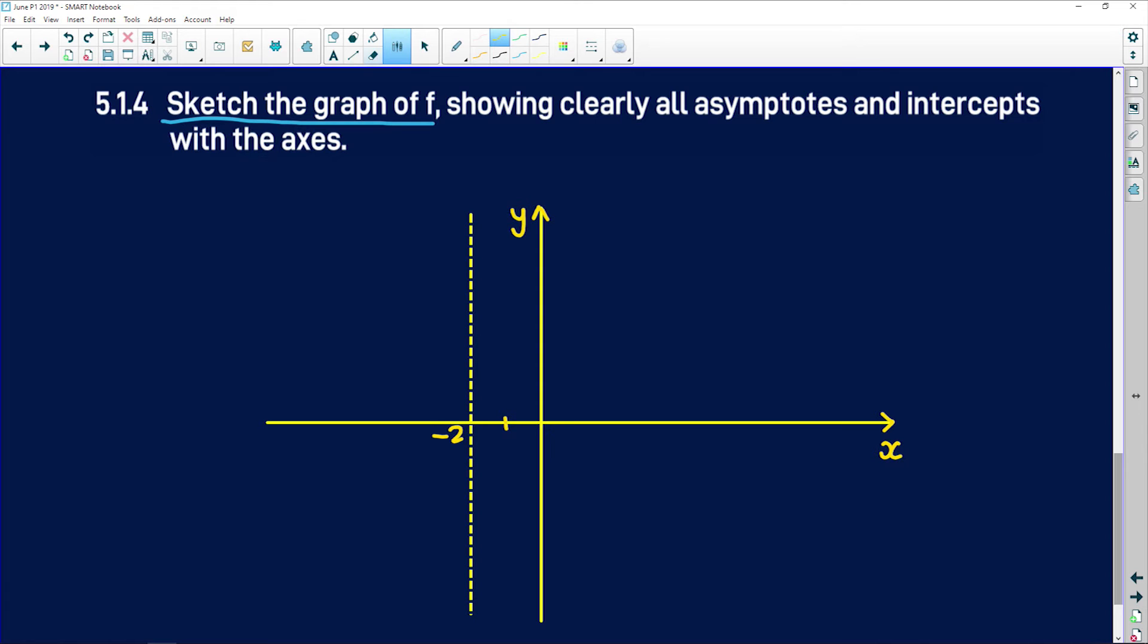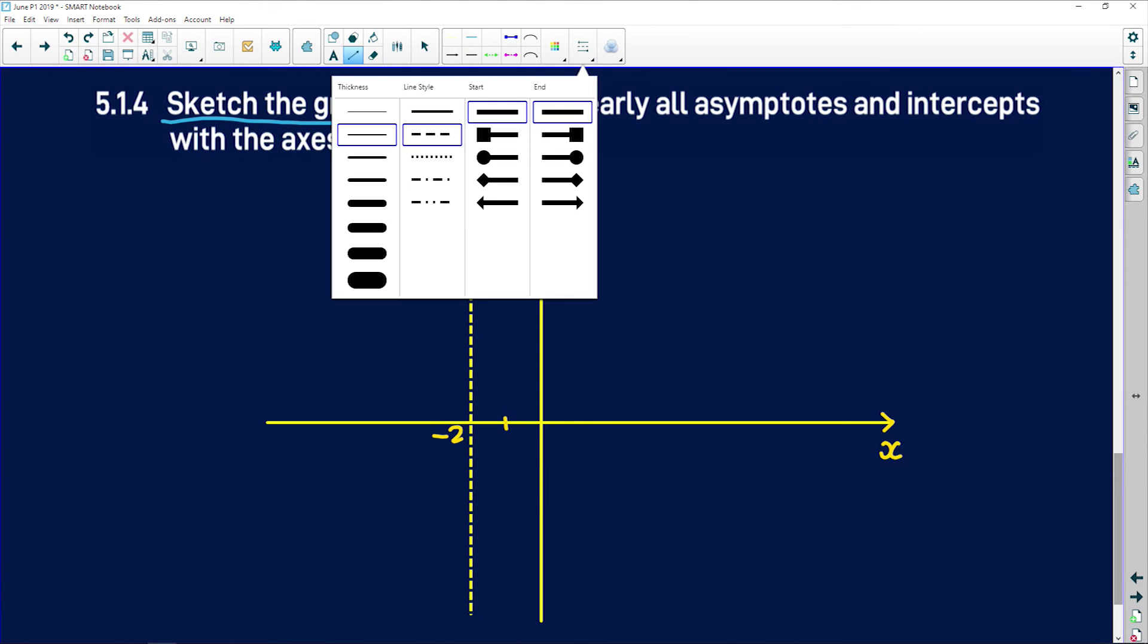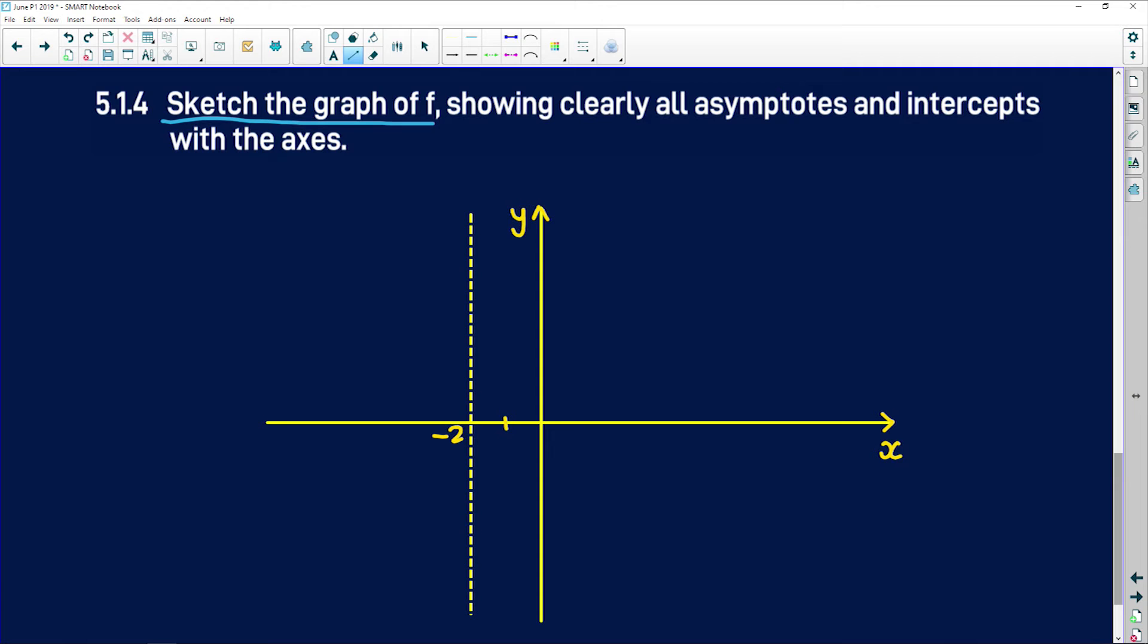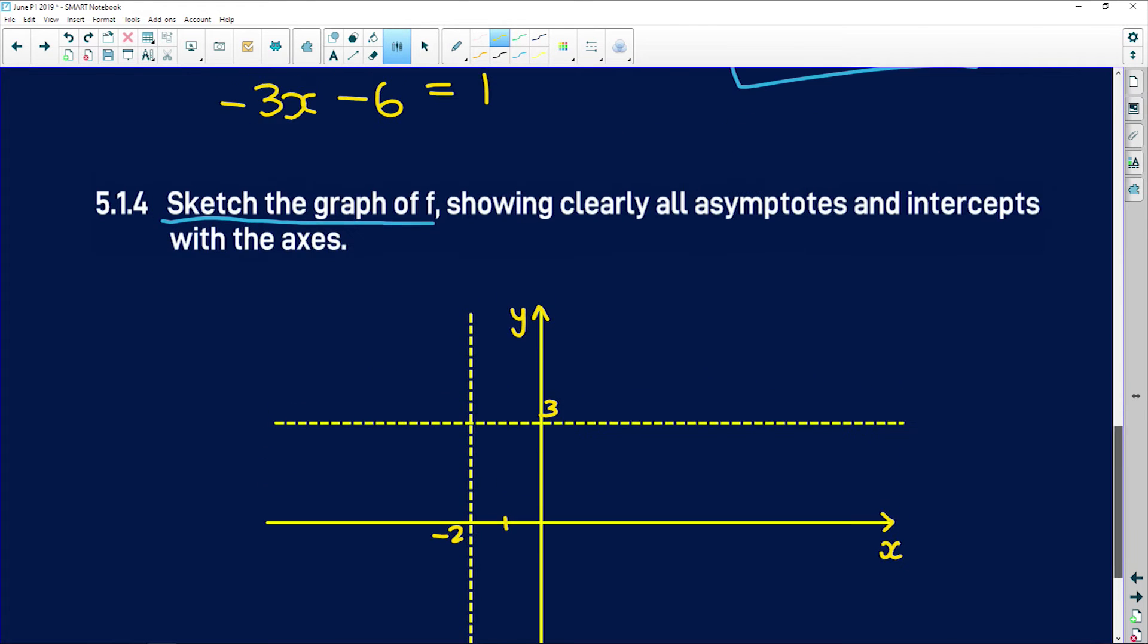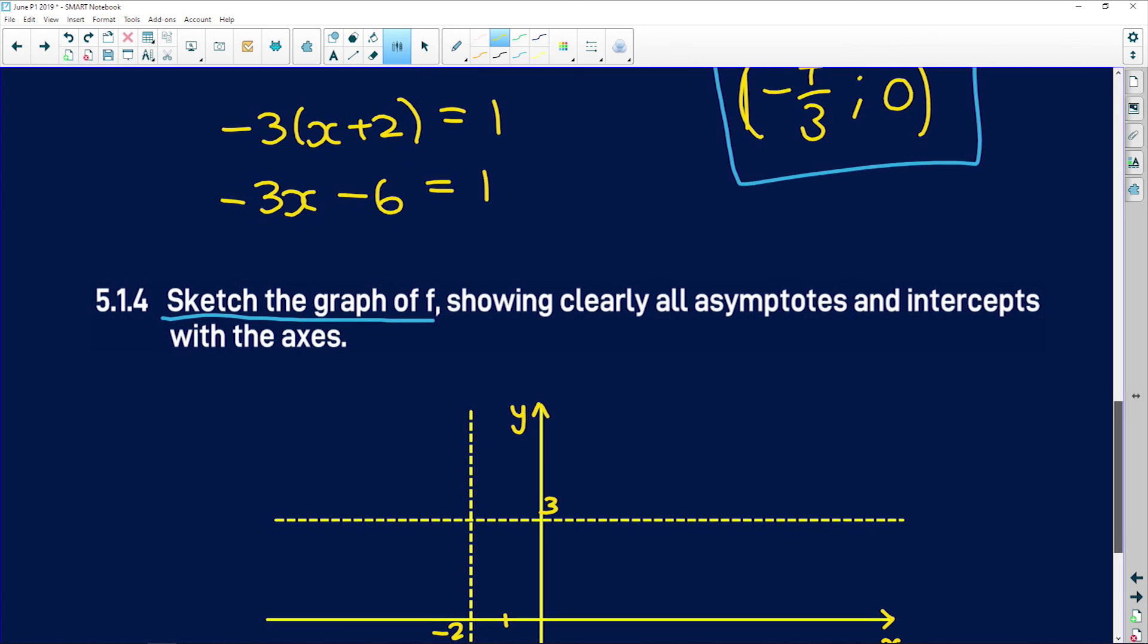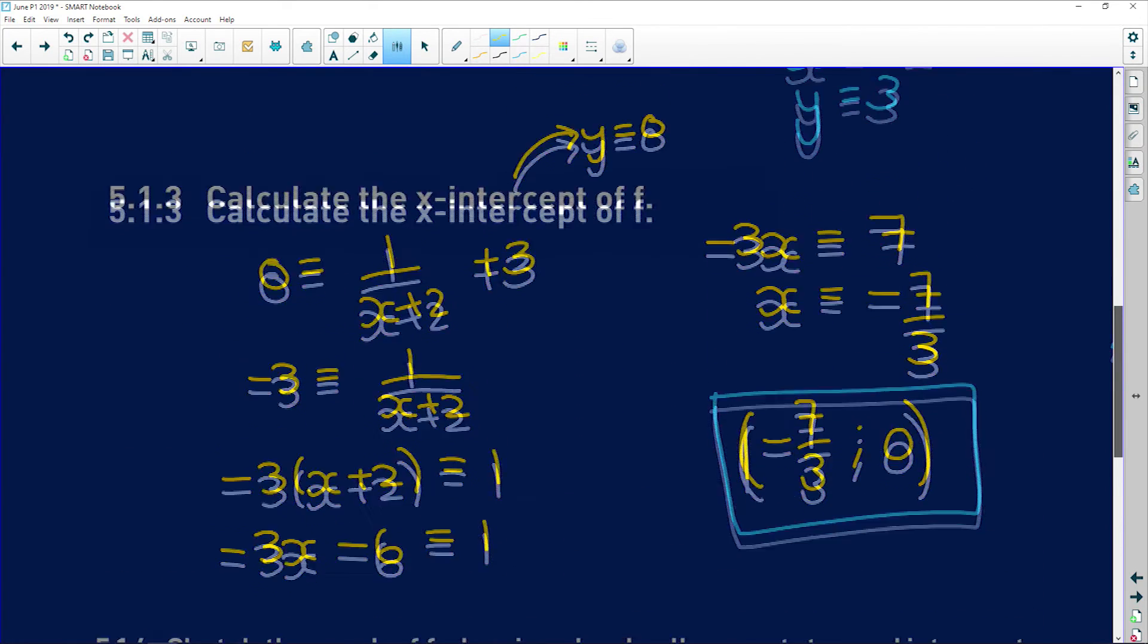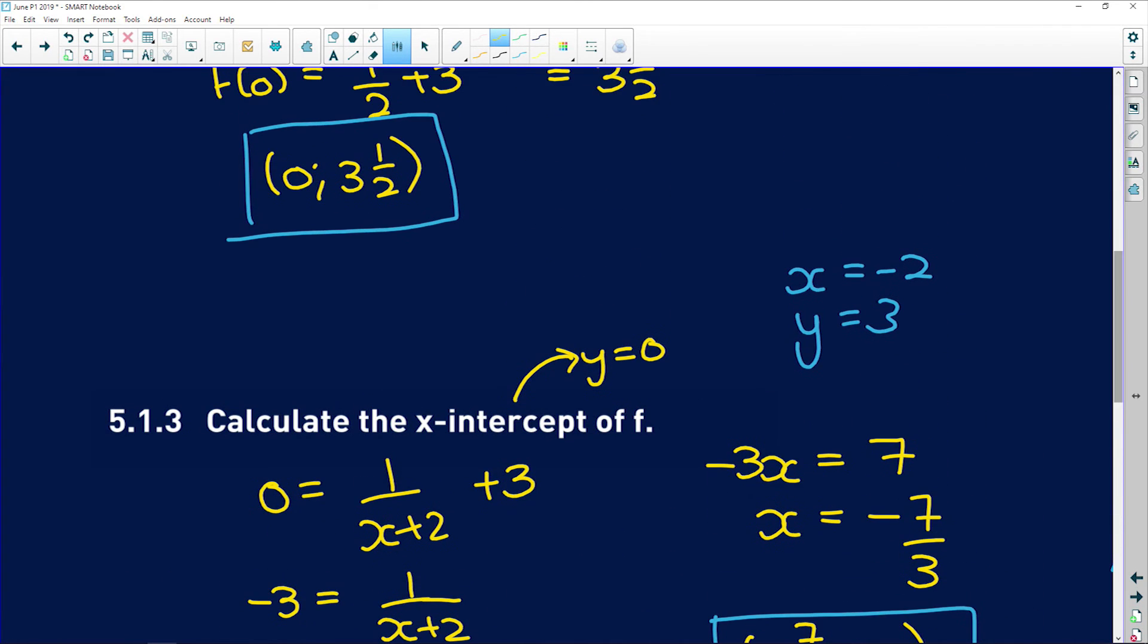And then at y equals 3, you're going to have another asymptote. So y equals 3 is the other asymptote. So now, if you go and look...